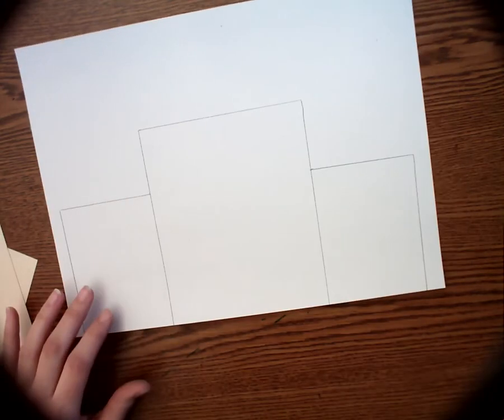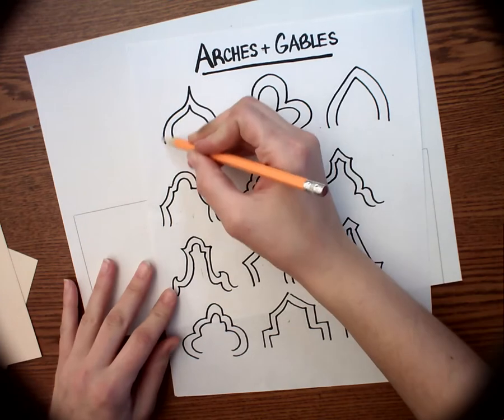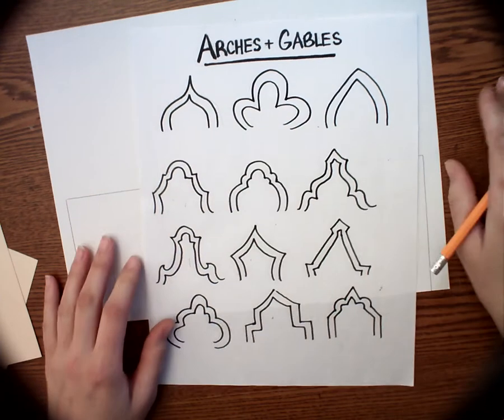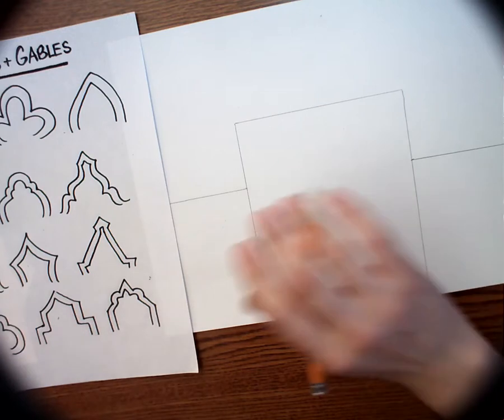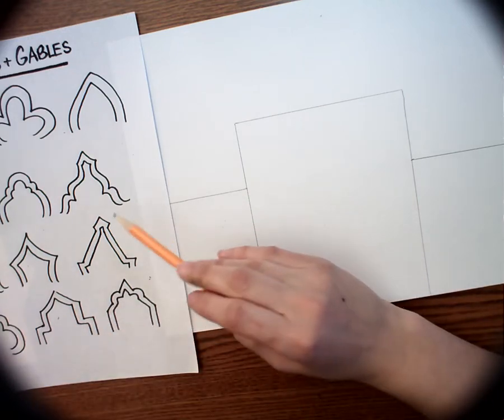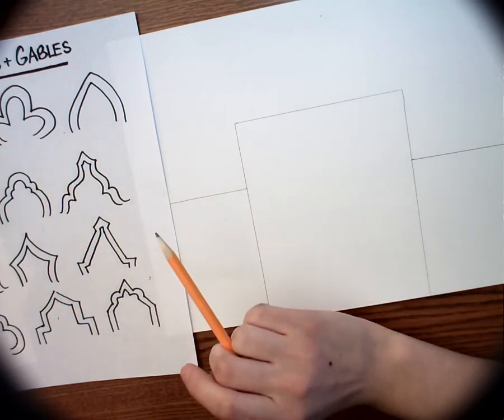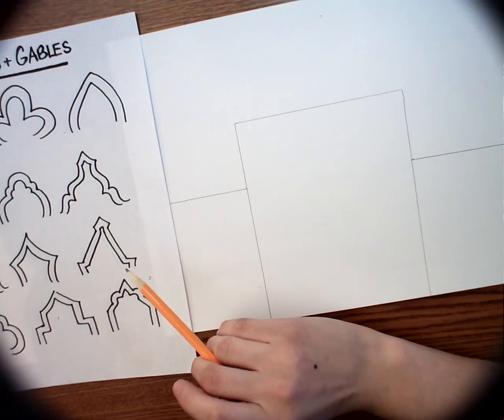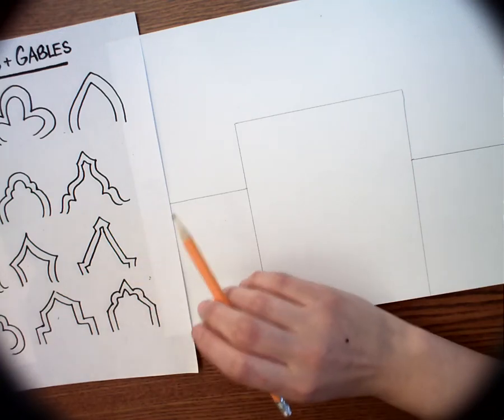Once you have your basic buildings in there, you want to figure out what kind of gables you want. The gables are what go on top of your building like the roof. If you've ever been in downtown St. Louis or any other city, you probably see buildings that have these fancy roofs, and those are sometimes called facades because they are not what the building looks like behind the front of the building.